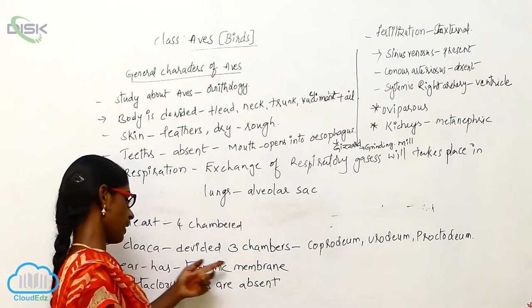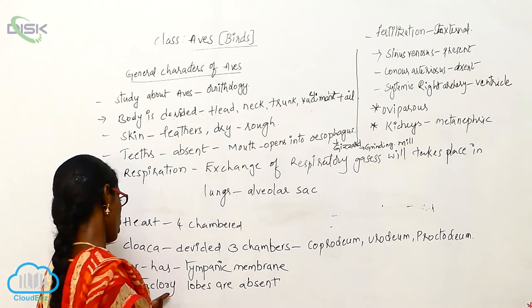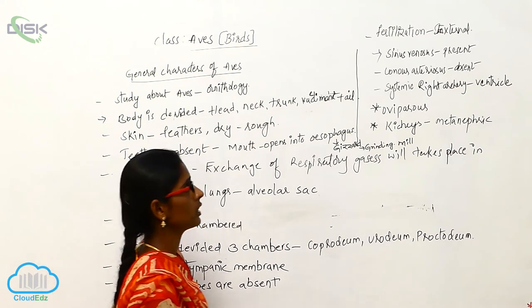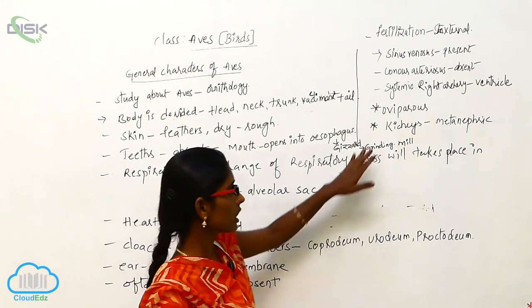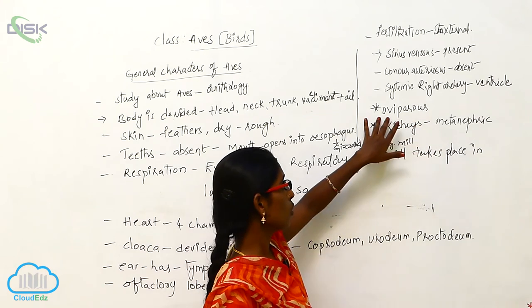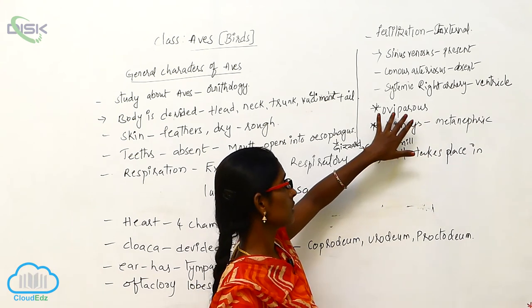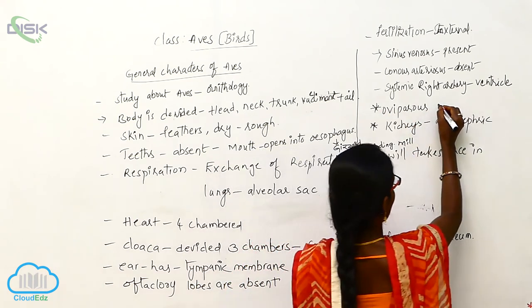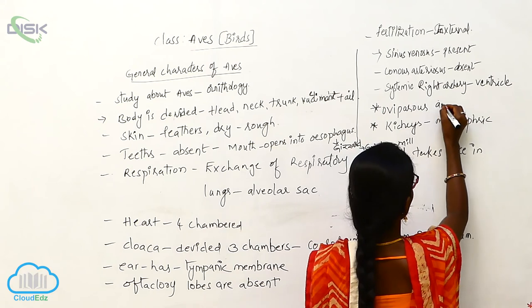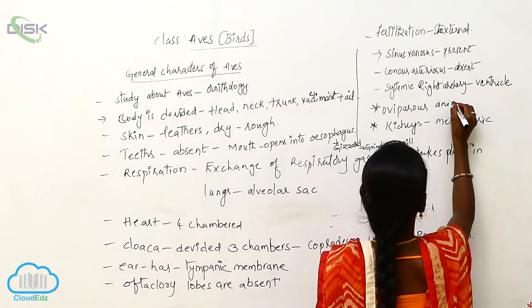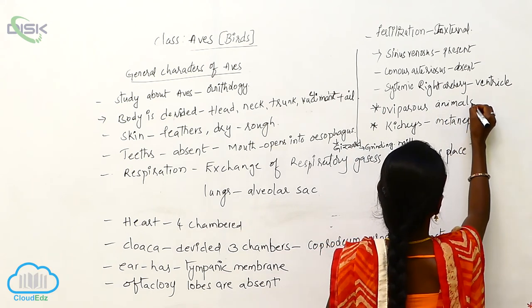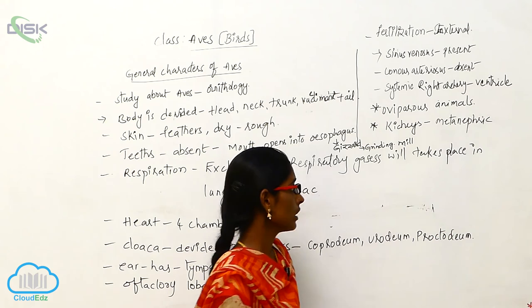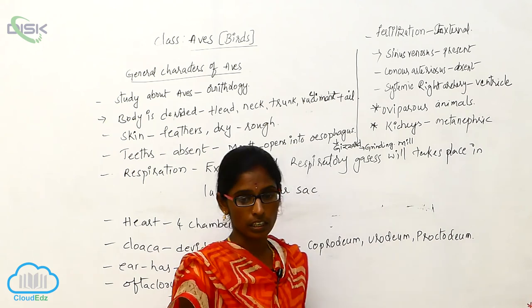The ear has a tympanic membrane. Olfactory lobes are absent. Kidneys are metanephric. These are oviparous animals, and fertilization takes place externally.